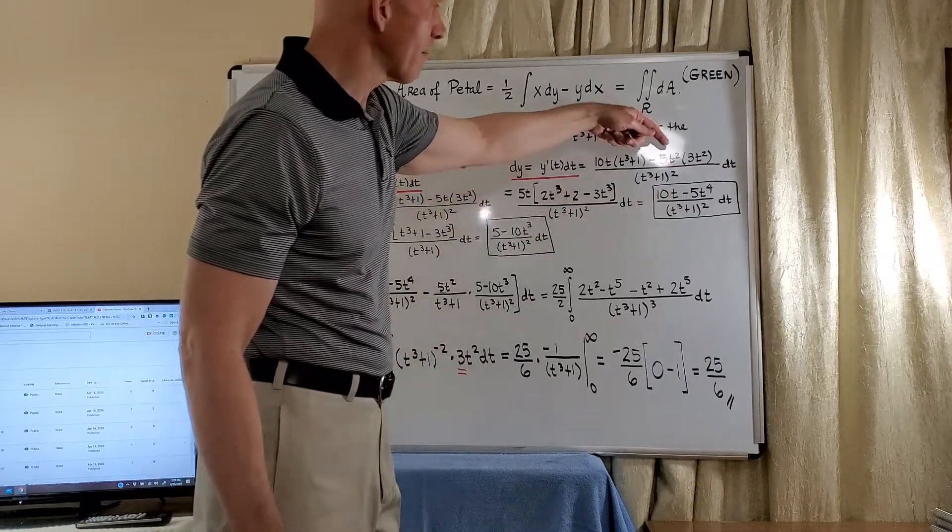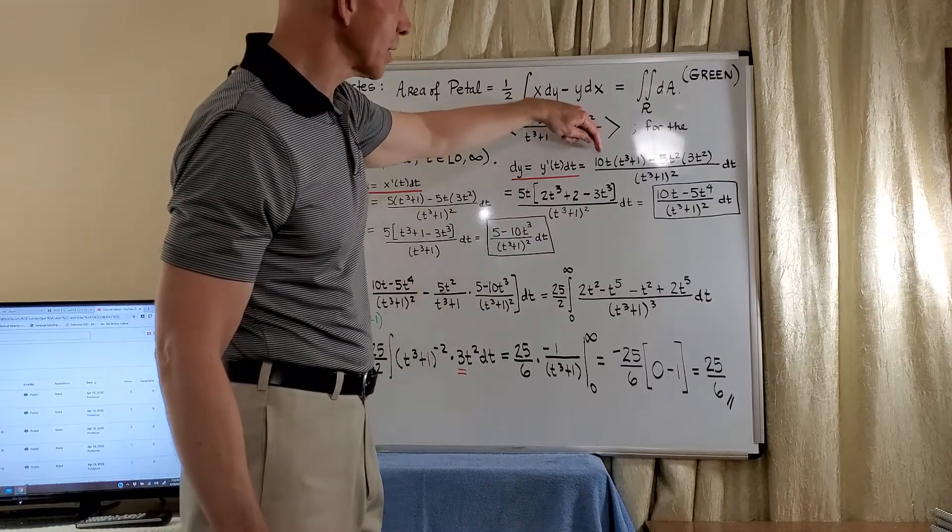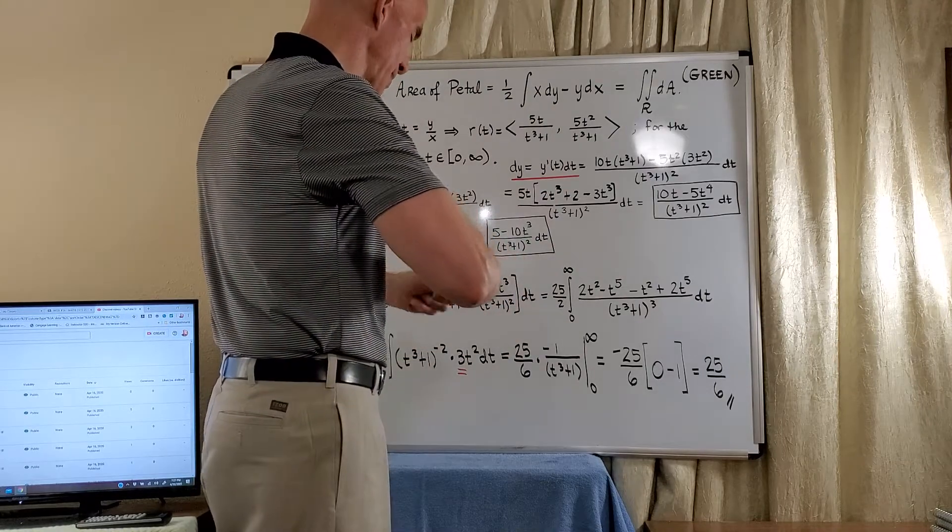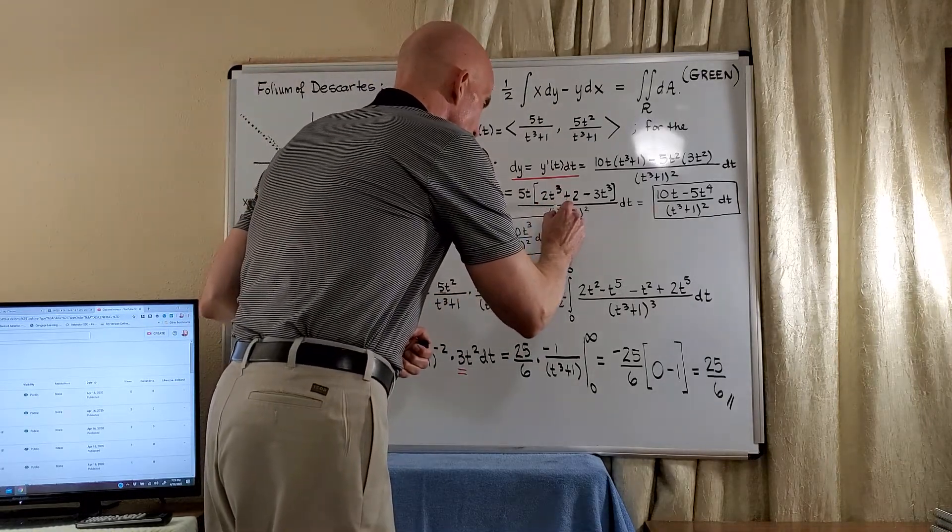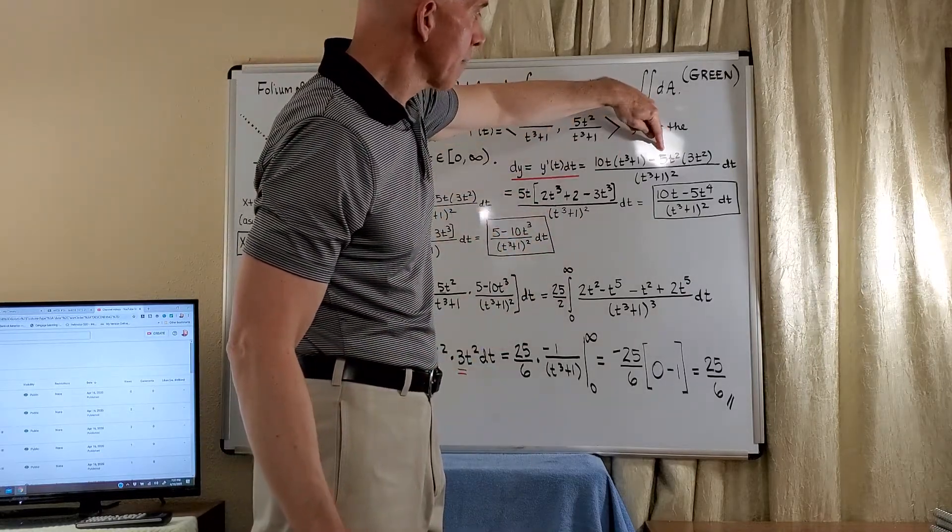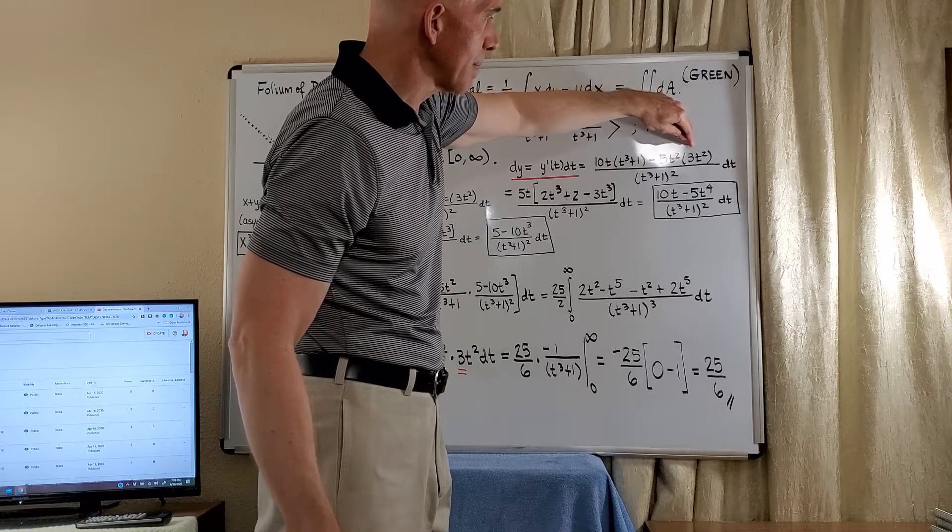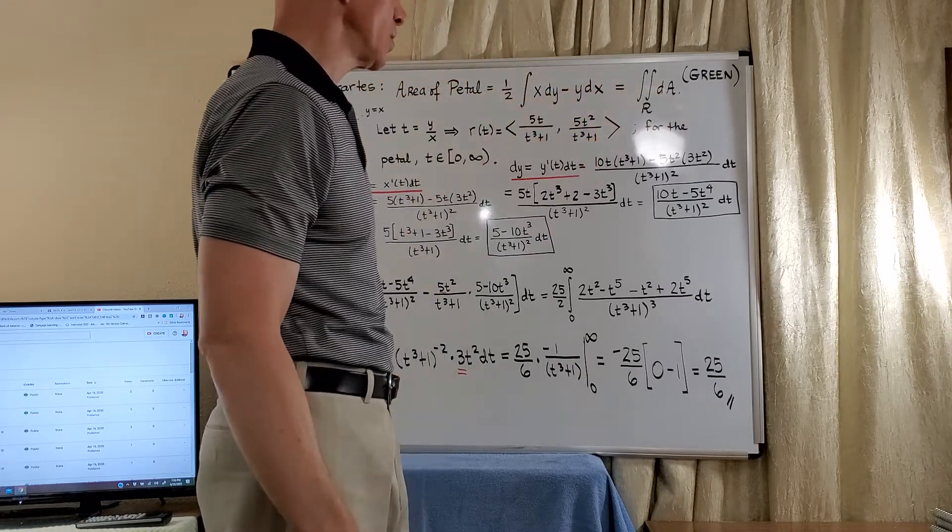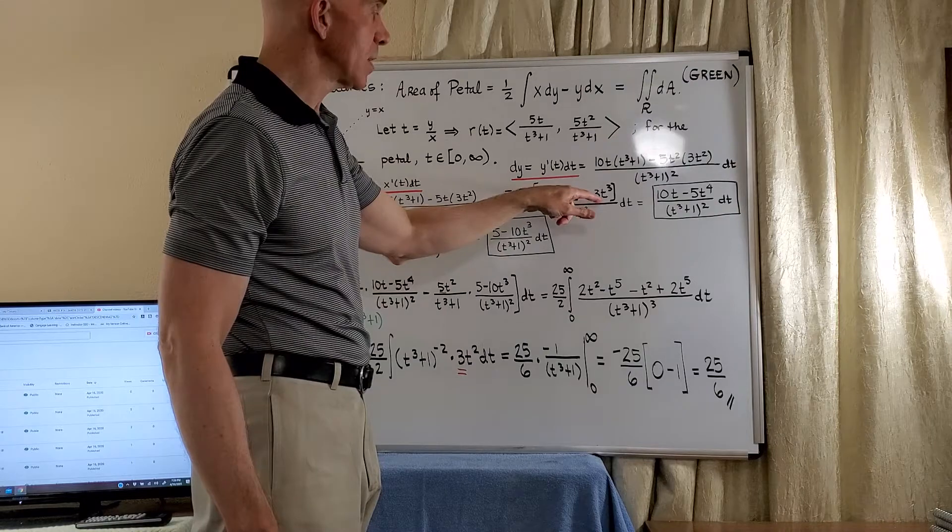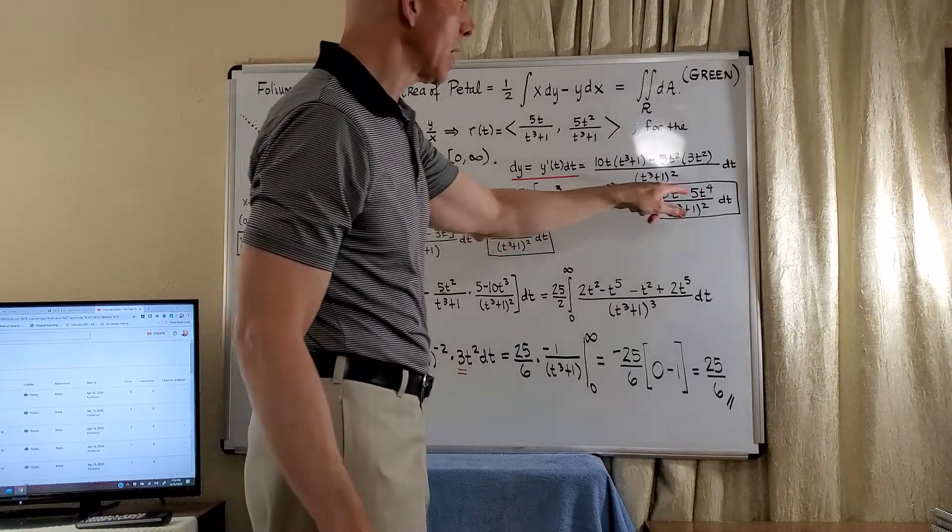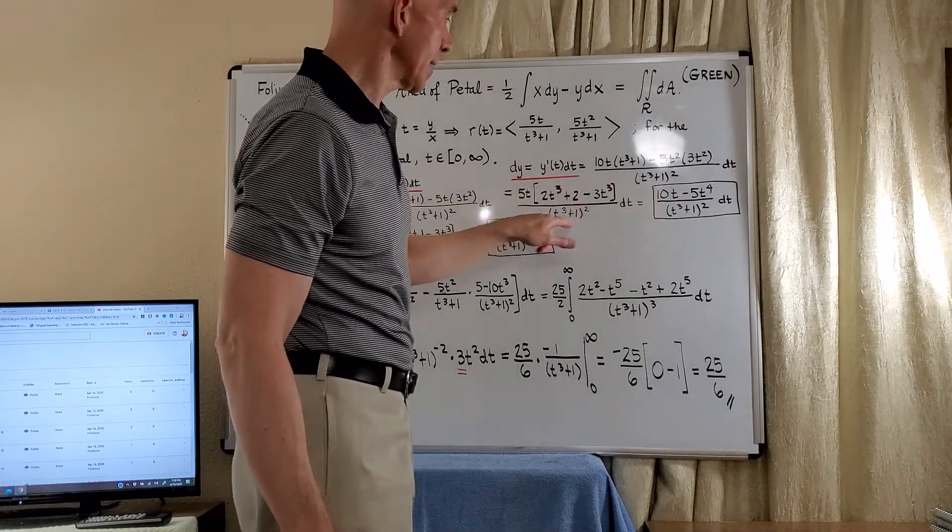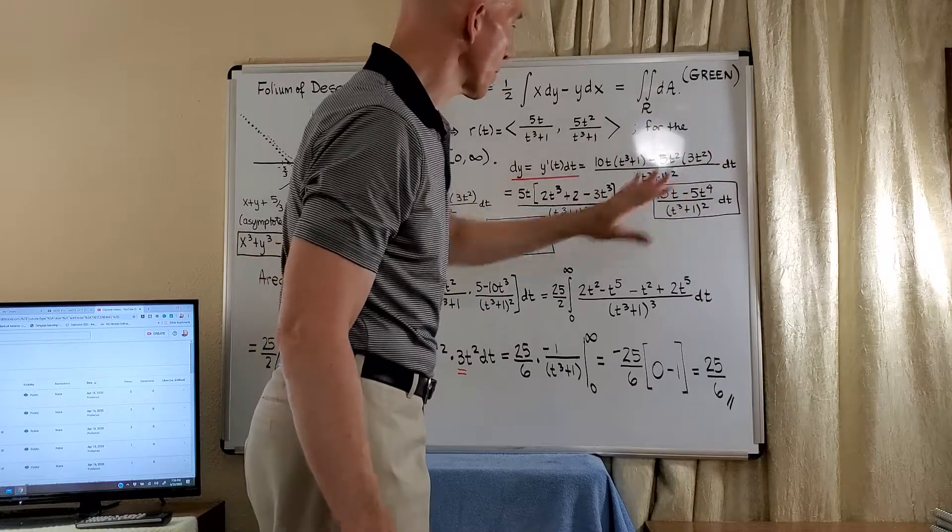Here I factored a 5t out of both of these. This will leave a 2 behind to give us 2t cubed plus 2. We extracted a 5t, giving us negative t times 3t squared, which is negative 3t cubed. We can combine: this will give us negative t cubed, times 5t gives us negative 5t to the fourth. And 5t times 2 gives us 10t. Move the denominator over dt, so there's our dy.